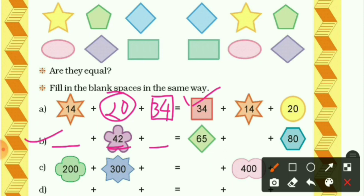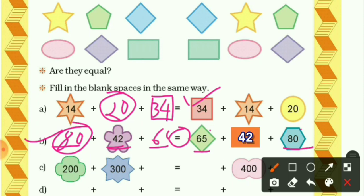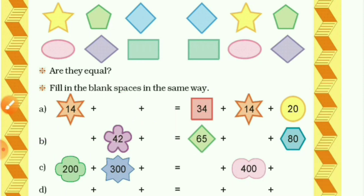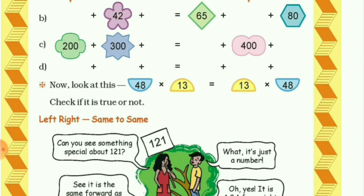Come to the second question. On the left side we have 42, and there are two blank spaces. On the right side we have 65 plus blank plus 80. Since both sides must be equal using the same numbers, we fill in 65 and 80 on the left side. You can write 65 and 80 in any order.